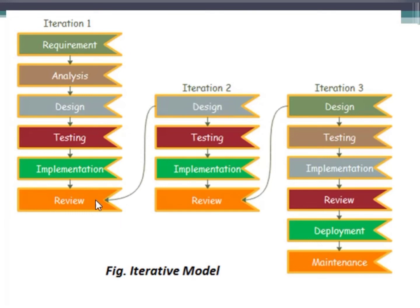In the next iteration, we do not start from requirement analysis — we directly start from the design phase. This design will be based on the changes proposed in the previous iteration. Again the same steps follow: design, implementation, testing, and review. This review process is conducted until no new changes come in the review. Once the review is accepted with no new changes, we deploy the project. After deployment, the last phase is maintenance, where the software is continuously monitored, feedback is collected, and bugs are resolved.